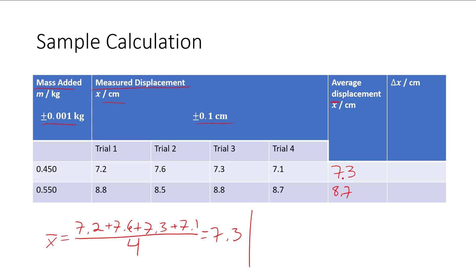So next up we need to find the uncertainties. Uncertainties are going to be the range over 2. So for 0.450, we're just going to take the largest value, which is 7.6, minus the smallest value, 7.1, and divide by 2, which gives us 0.5 over 2, which is 0.25. And we're going to round that to the first significant digit, so our uncertainty is 0.3.